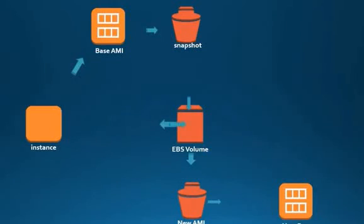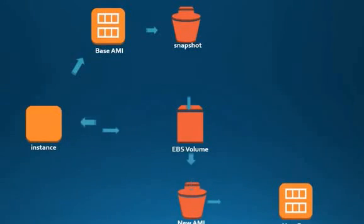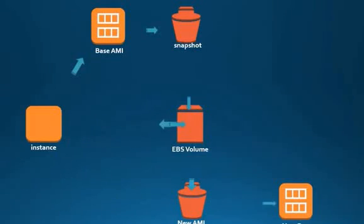Once you have configured all those things on that volume, you can take a snapshot of that volume. Once you take that snapshot, you can create another base AMI image from that snapshot. Now your base snapshot for your application or environment is ready.